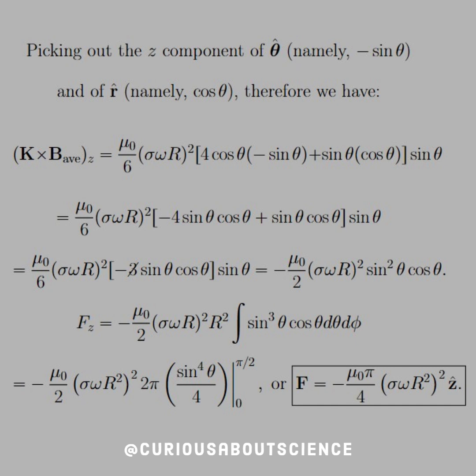Remember that these unit vectors themselves are composed of Cartesian representations because they shift every time we change points. Therefore, we have this cross product in the z direction simplifying down with a lot of substitution, Euler's identity, cancellation, all that fun stuff. All those things canceling down, and we get to a negative μ₀ over 2 σωR² sin² θ cos θ.